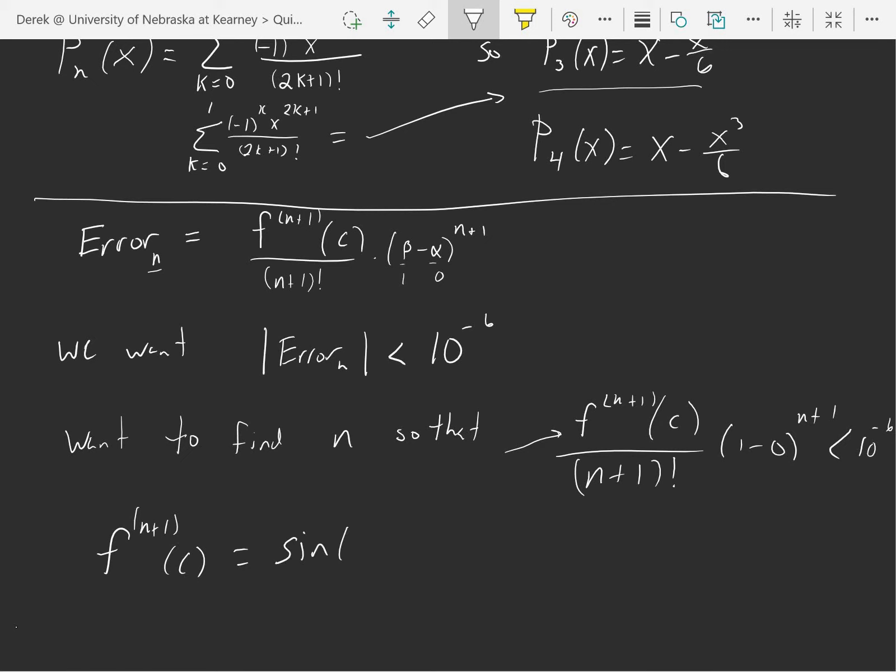The n plus first derivative of the sine is, well it's either the sine or the cosine. It's either the sine of c or the cosine of c, and those are both in absolute value less than 1.